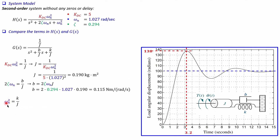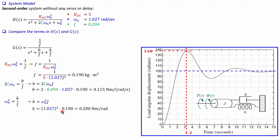For the spring constant, the constant term in the denominator is omega_n squared, which equals K over J. Therefore K equals J times omega_n squared. With known values of J and omega_n, this gives K equal to 0.200 Newton meters per radian — again a different unit than in the translational system. All necessary calculations are now done.